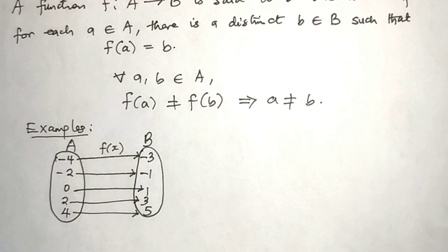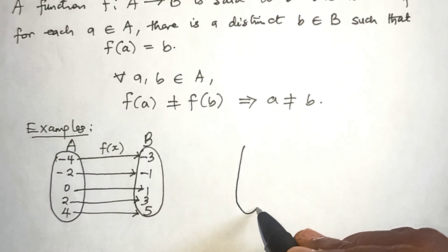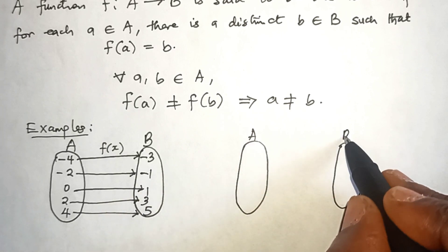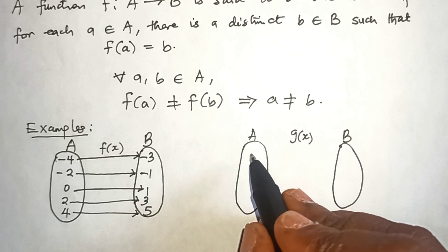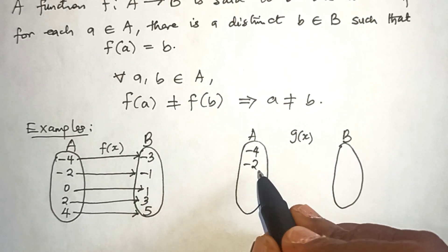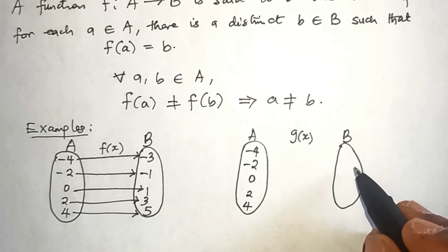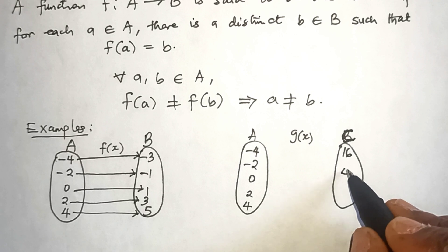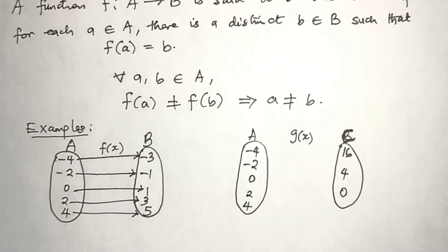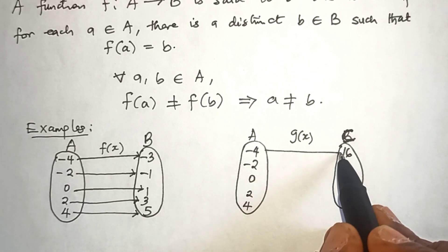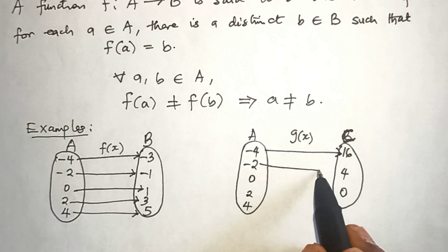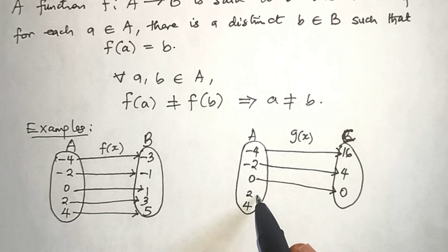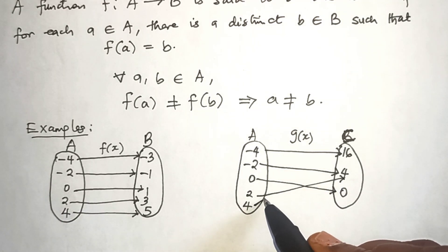Continuing the mapping for f(x): 2 is mapped to 3, and 4 is mapped to 5. I also have another function g(x), a mapping from set A into set C. In set C the elements are {16, 4, 0}. Then -4 is mapped to 16, -2 is mapped to 4, 0 is mapped to 0, 2 is mapped to 4, and 4 is mapped to 16.